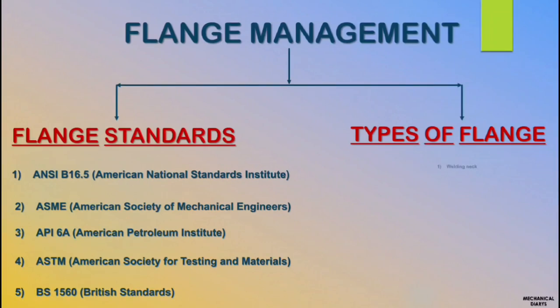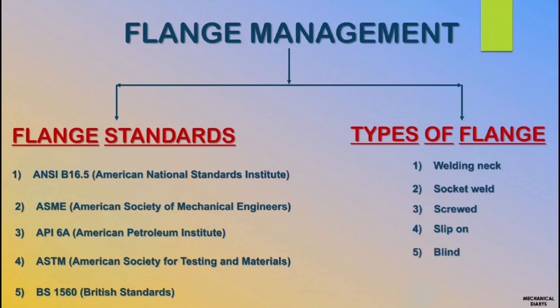Next we'll move to types of flanges. There are seven types of flange in refinery. First is welding neck. Second is socket weld. Third is screwed flange. Fourth is slip-on flange. Fifth is blind flange. Sixth is lap joint flange. Last is orifice flange.